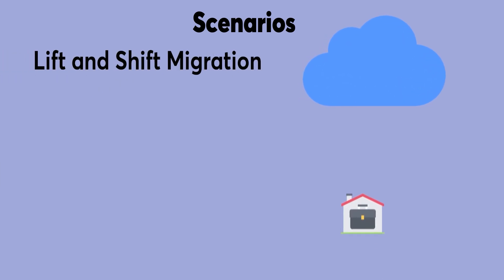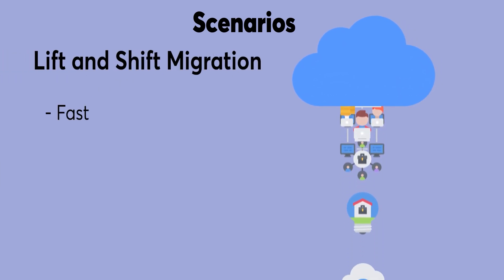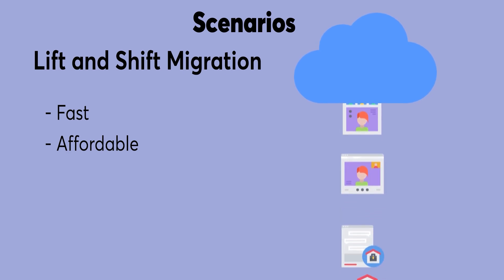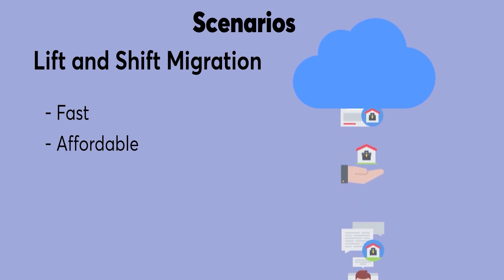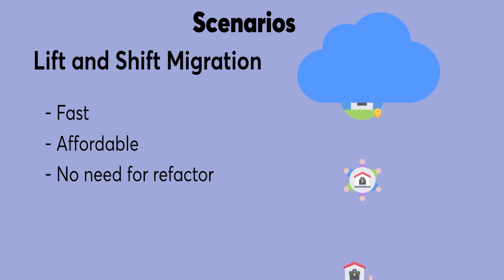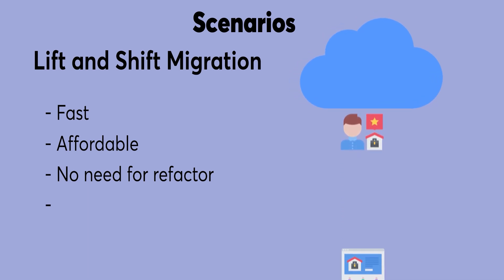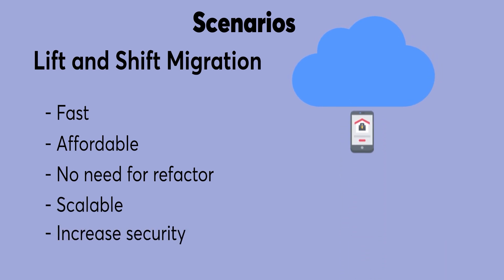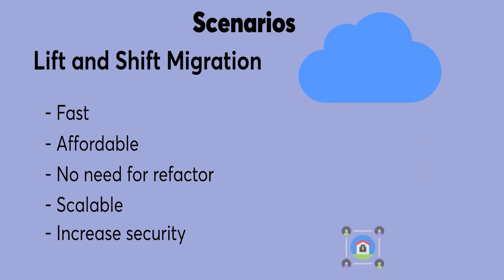Here are some scenarios where you would want an IaaS subscription. Lift and shift migration: this is the fastest and least expensive method of migrating an application or workload to the cloud. Without refactoring your underlying architecture, you can increase the scale and performance, enhance the security, and reduce the costs of running an application or workload.